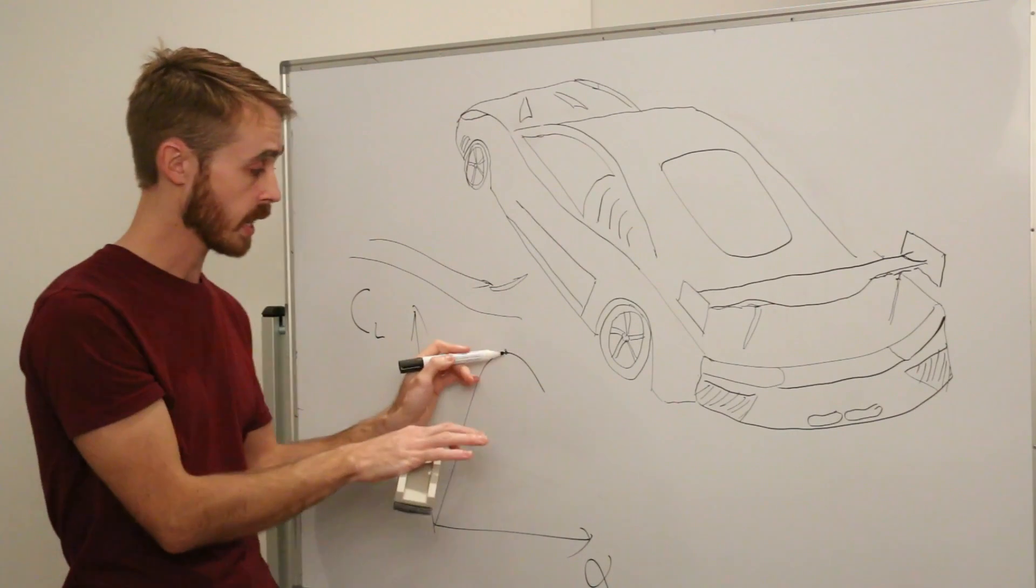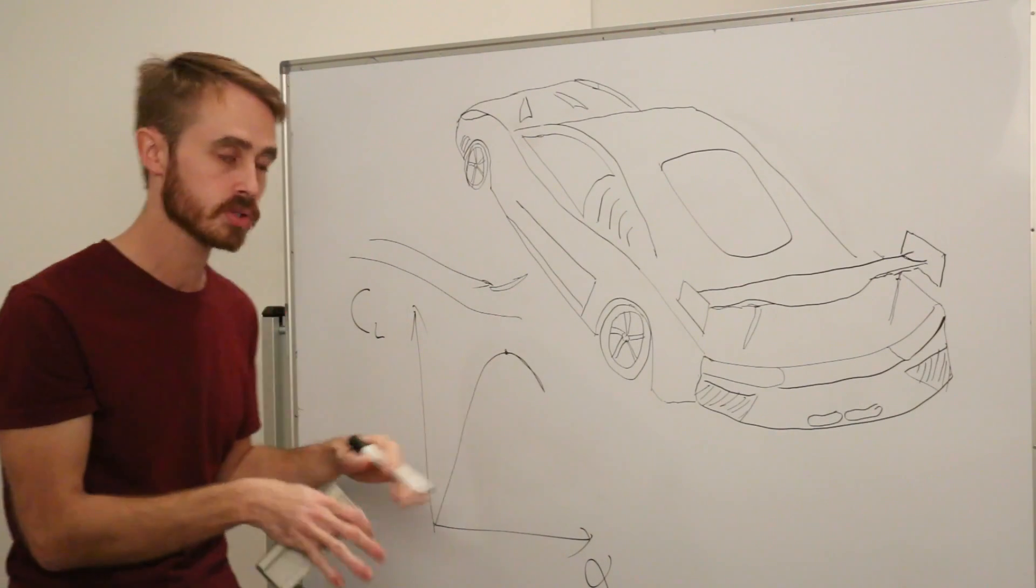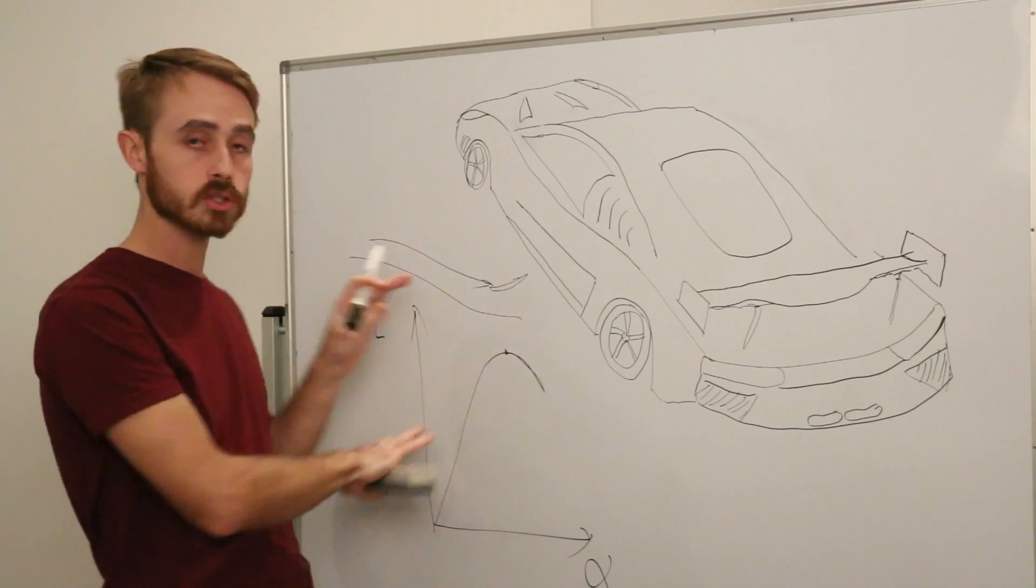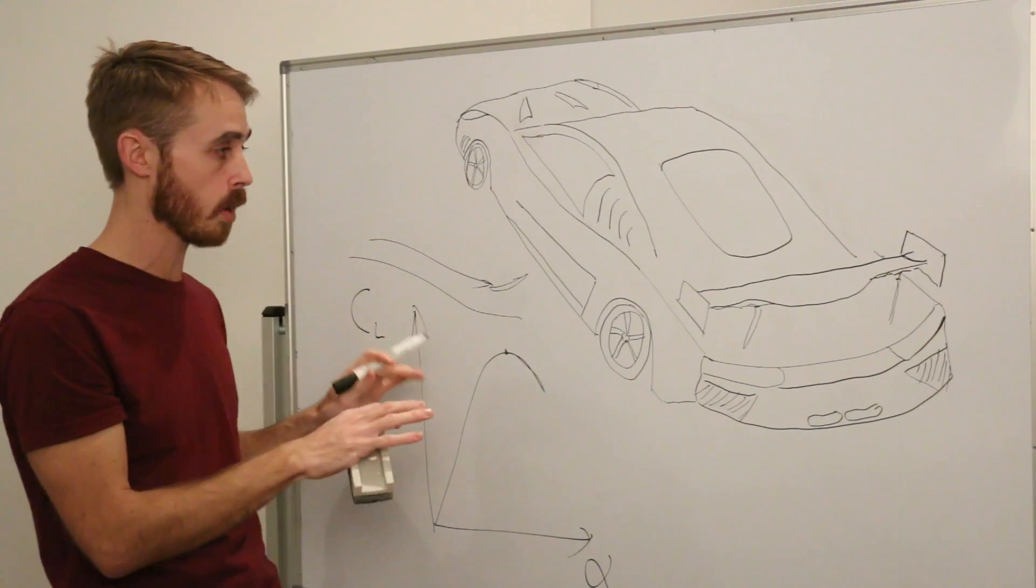The flow will separate off the back of the wing and the lift will start to decrease. It'll still produce lift but it won't be as efficient and drag will skyrocket up. So we can see that there's a certain angle range that we want to operate in.